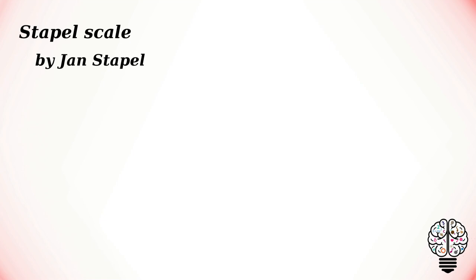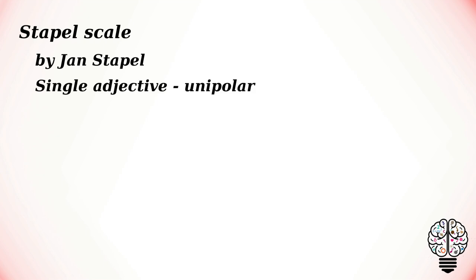The Staple scale was developed by Jan Staple. The scale is usually constructed vertically with a single adjective in the middle of the range of values, minus five to plus five. As it uses a single adjective, it is a unipolar scale. The respondents are asked to select the appropriate numerical response category that best describes the extent to which the adjective related to the object is accurate or inaccurate.